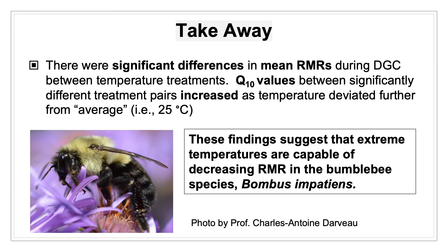In conclusion, significant decreases in mean RMRs during DGC were found between the control treatment of individuals at 25 degrees Celsius and each of the 15, 10, and 5 degrees Celsius treatments. Q10 values between these treatment pairs increased as temperature deviated further from average.